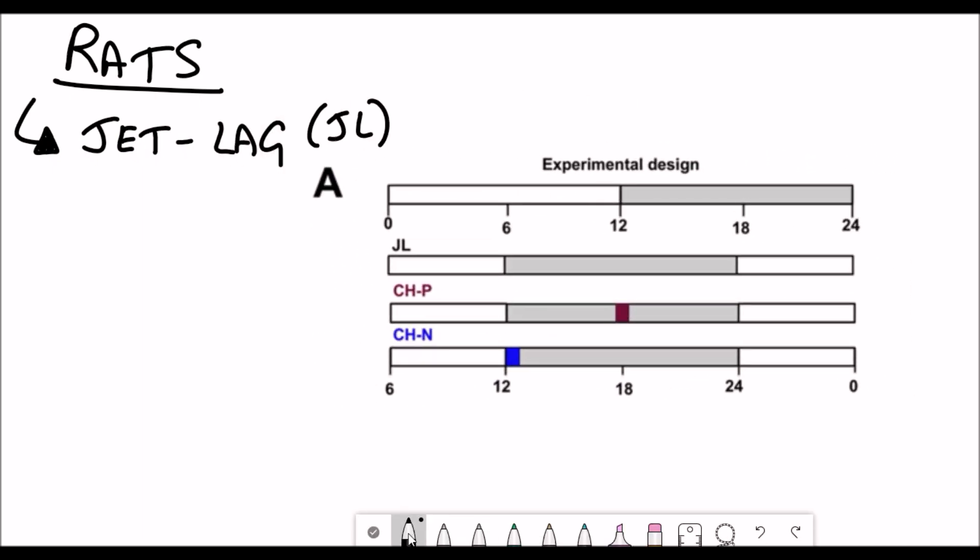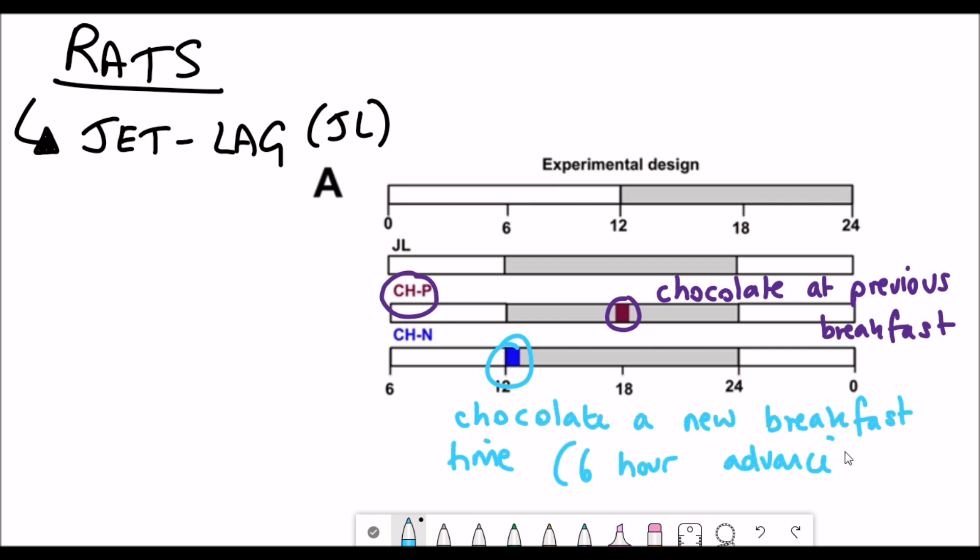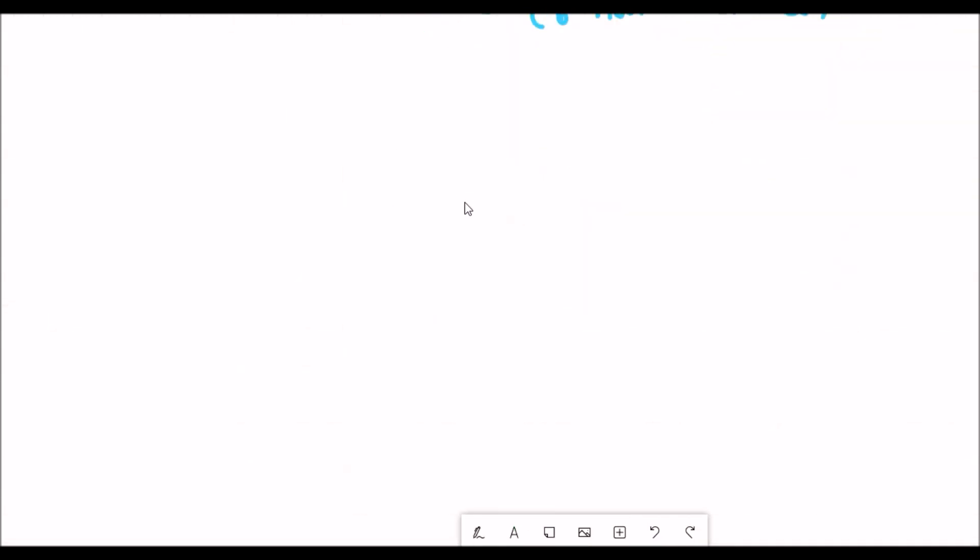So the authors took these rats and the first thing they did was devise an experimental design to jet lag these rats. Then they either gave the rats chocolate when they would usually have breakfast, or they gave them at the new breakfast time which is six hours in advance.